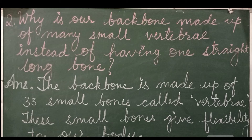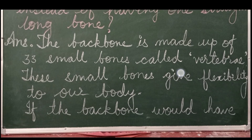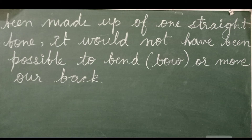Question 2: Why is our backbone made up of many small vertebrae instead of having one straight long bone? If it were a straight long bone, movement, dance, or gymnastics would not be possible. Answer: The backbone is made up of 33 small bones called vertebrae. These small bones give flexibility to our body. If the backbone were made up of one straight bone, it would not have been possible to bend or move our back.